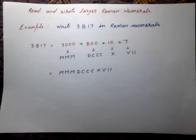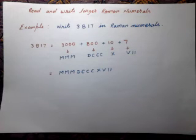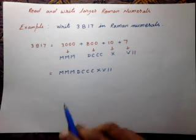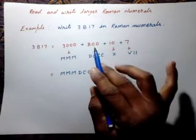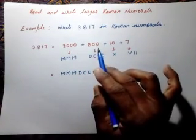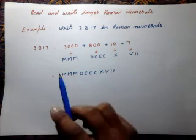On adding 1000 plus 900 plus 30 plus 1, we get the answer 1931. Now let us look at another example. Write 3817 in Roman numerals. We first write the number 3817 in expanded notation: 3000 plus 800 plus 10 plus 7.